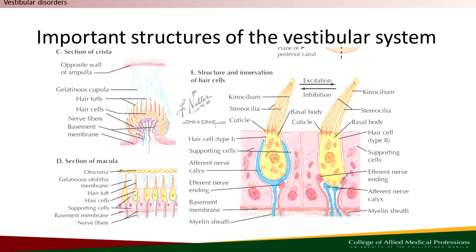Taking a closer look at the hair membranes, you'll find a long piece of hair fiber with structures called stereocilia and kinocilia. When the movement of the endolymph pushes towards the kinocilium, it sends excitatory signals. Conversely, if it pushes against the stereocilia, inhibitory signals are produced. This intricate interplay between otoconia, hair membranes, and endolymph is essential for accurately detecting changes in position and maintaining balance.